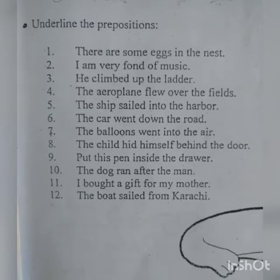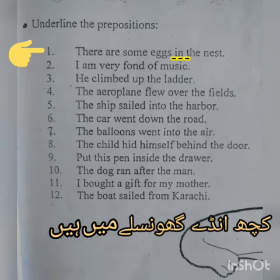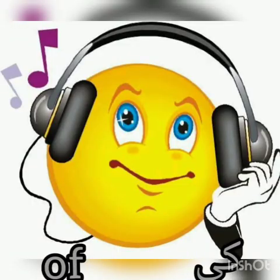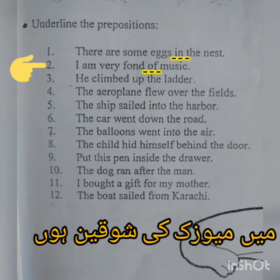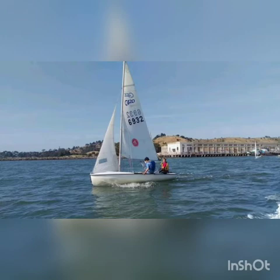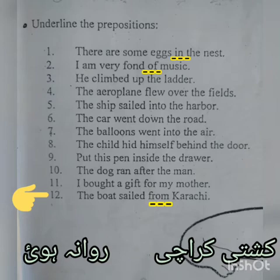Underline the prepositions. Number 1: There are some eggs in the nest. बहुत से अंडे घोंसले में हैं और यहाँ पर preposition है in. अगर हम sentence में से in यानि 'में' को हटा दें, तो sentence का कोई sense नहीं बनेगा. Number 2: I am very fond of music. मैं music की शौकीन हूँ. इस sentence में of preposition है. अगर हम sentence में से of यानि 'की' को हटा दें, तो sentence incomplete होगा. Number 12: The boat sailed from Karachi. कश्ती कराची से रवाना हुई. इस sentence में from preposition है. अगर हम इस sentence में से from को हटा दें, तो इसके meaning change हो जाएंगे, और मतलब बनेगा कश्ती कराची रवाना हुई. इसकी direction बताने के लिए हमें preposition लगाना ज़रूरी है.